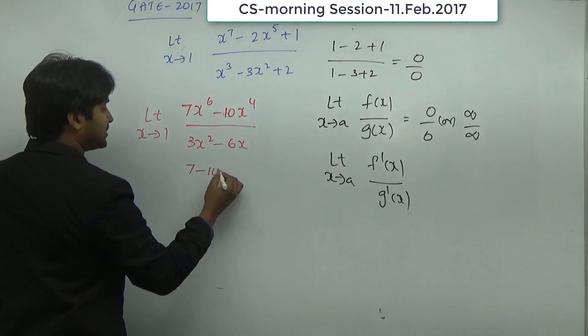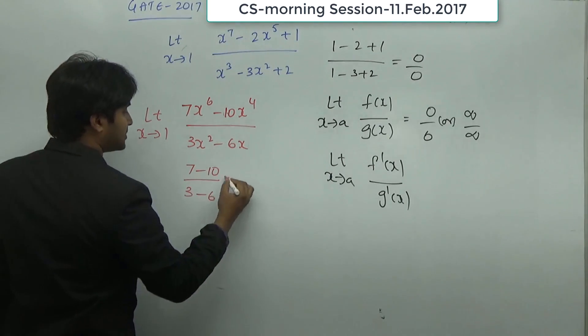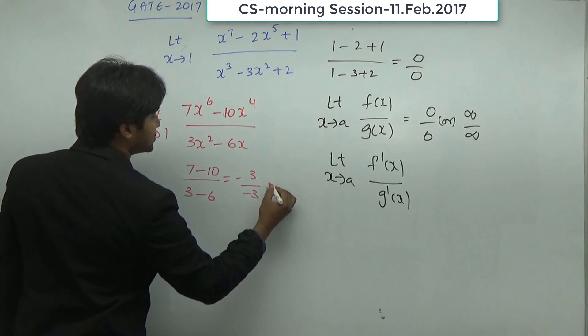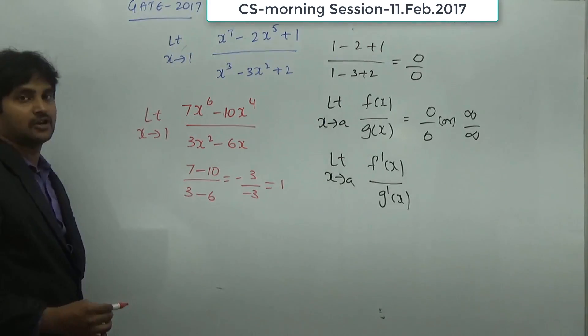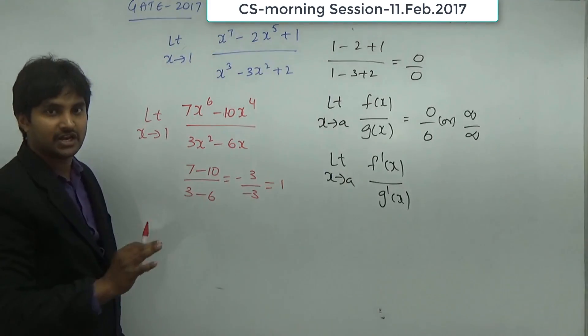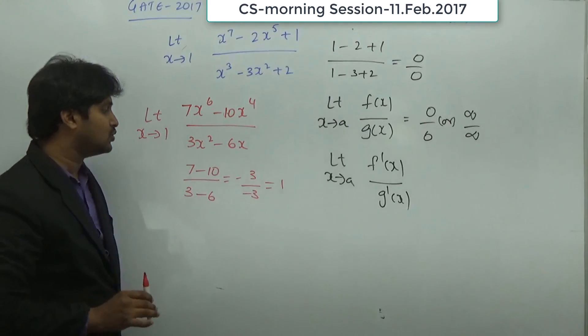Now 7 minus 10 divided by 3 minus 6. It is equal to minus 3 divided by minus 3, it is equal to 1. So the answer for this particular question is equal to 1. It's a numerical entry question, you have to just type it as equal to 1.